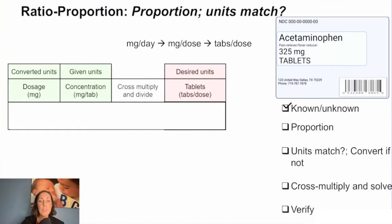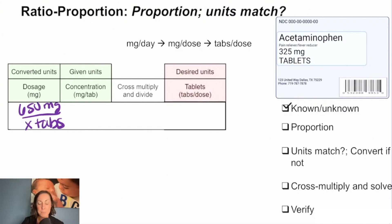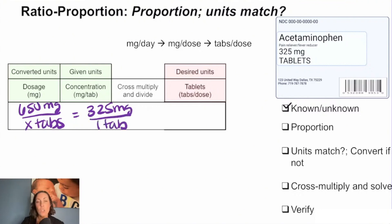When we do that, we take our 650 milligrams of tablets and we need to know how many tablets to give. So we need that relationship: 650 milligrams — we want to know how many tablets that is, so X tabs. And what we know is our 325 milligrams are in each one tab.